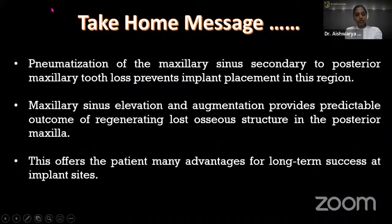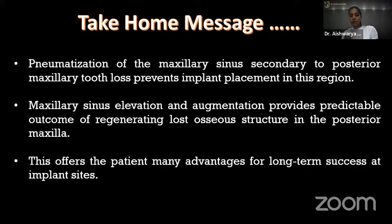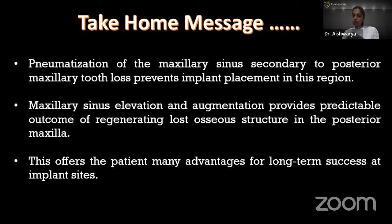The take-home message: Pneumatization of the maxillary sinus following tooth loss prevents implant placement. Maxillary sinus elevation and augmentation provide predictable outcomes for regenerating lost osseous structure in the posterior maxilla, offering patients long-term success. Attempt the indirect or direct maxillary sinus procedure as appropriate — if sub-antral bone height is less than 5 mm, direct sinus lift is indicated.